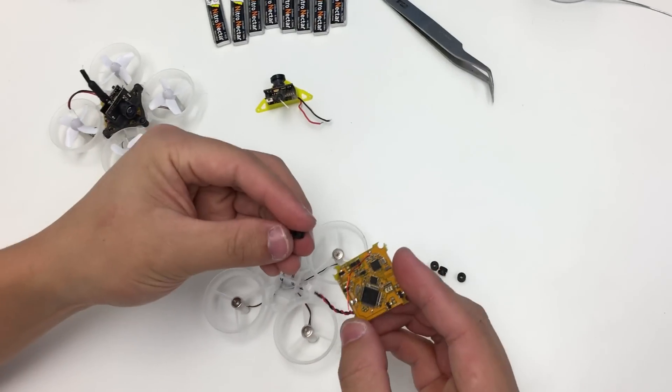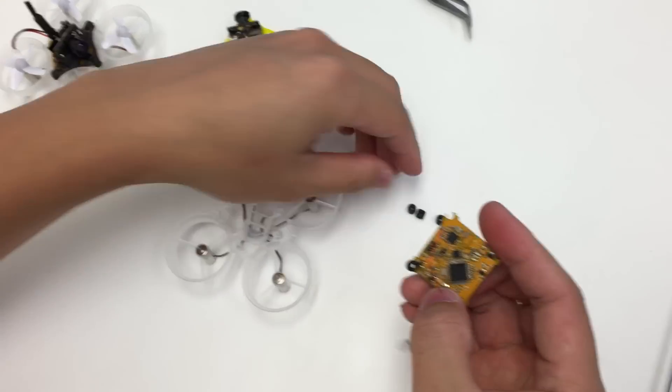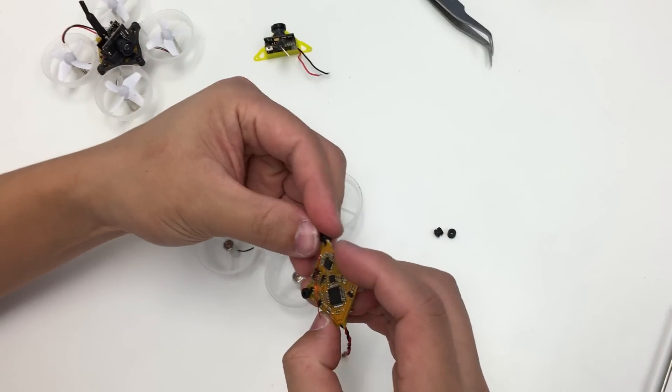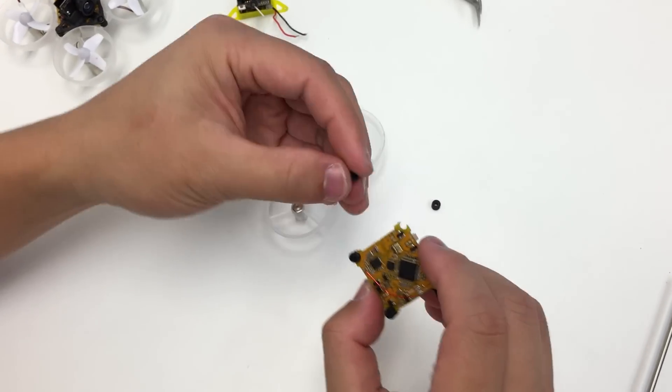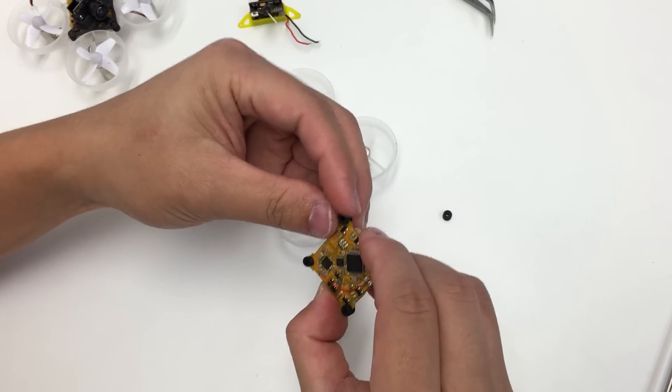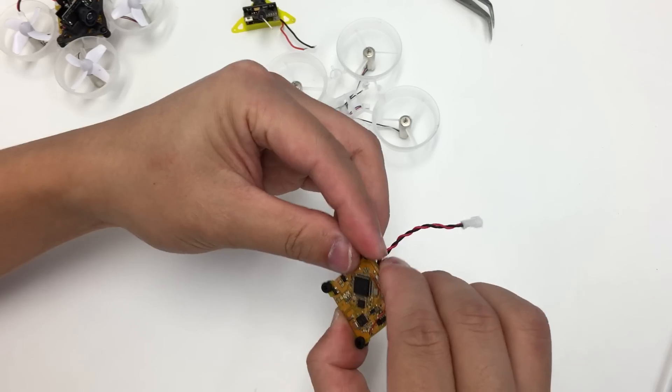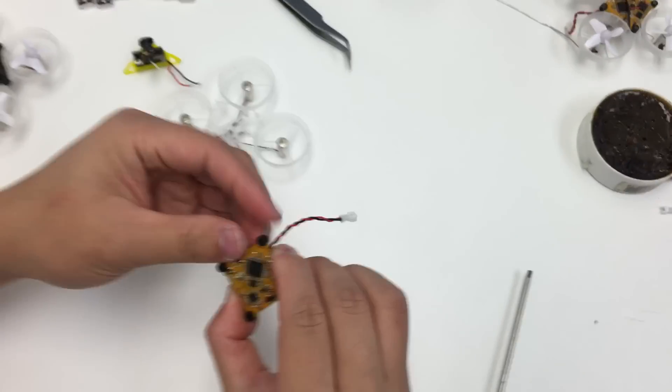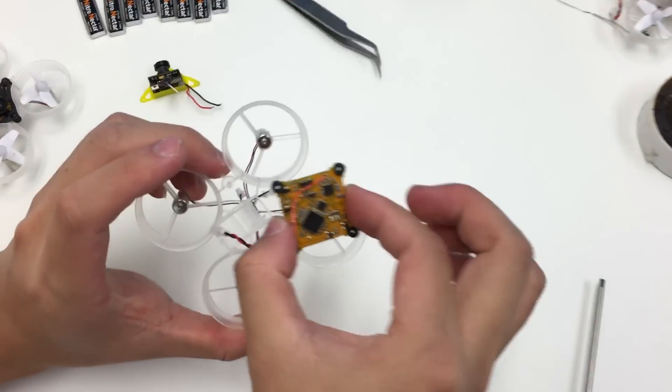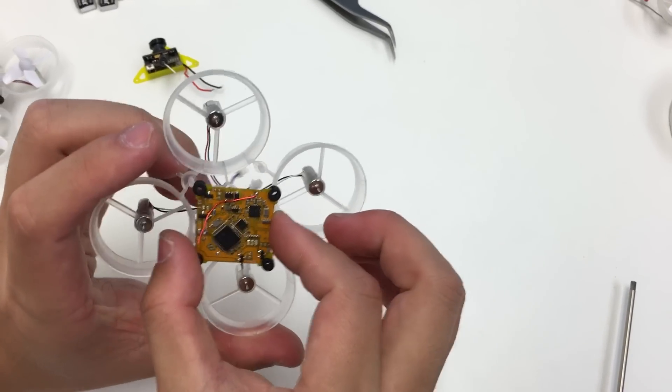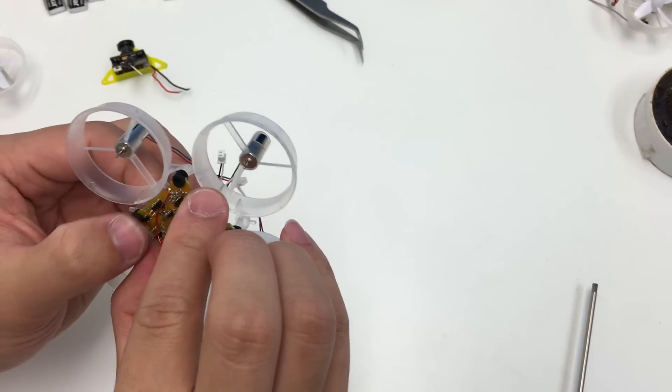The reason we're getting this video out now is so you can get your frames prepared for when your Bee Brain arrives. Just snip off those two sides, then take the flight controller and slide it into the back there. Grab the provided grommets and push four grommets in.